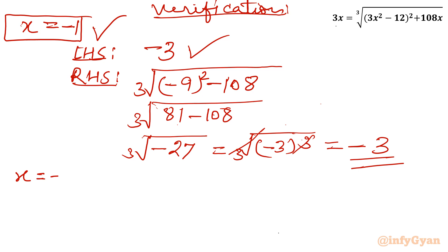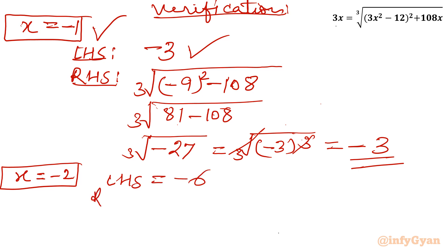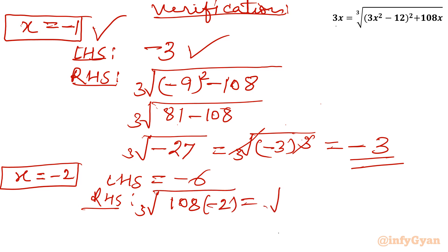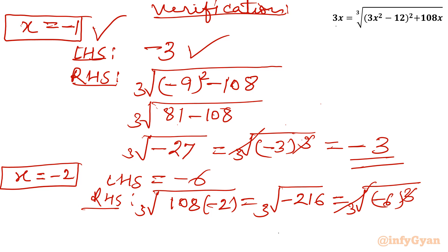For x = −2: LHS = 3(−2) = −6. RHS = cube root of [(3(4) − 12)² + 108(−2)] = cube root of [(12 − 12)² − 216] = cube root of (0 − 216) = cube root of (−216). Since 6³ = 216, this equals −6, which matches LHS. So x = −2 is also a true solution.